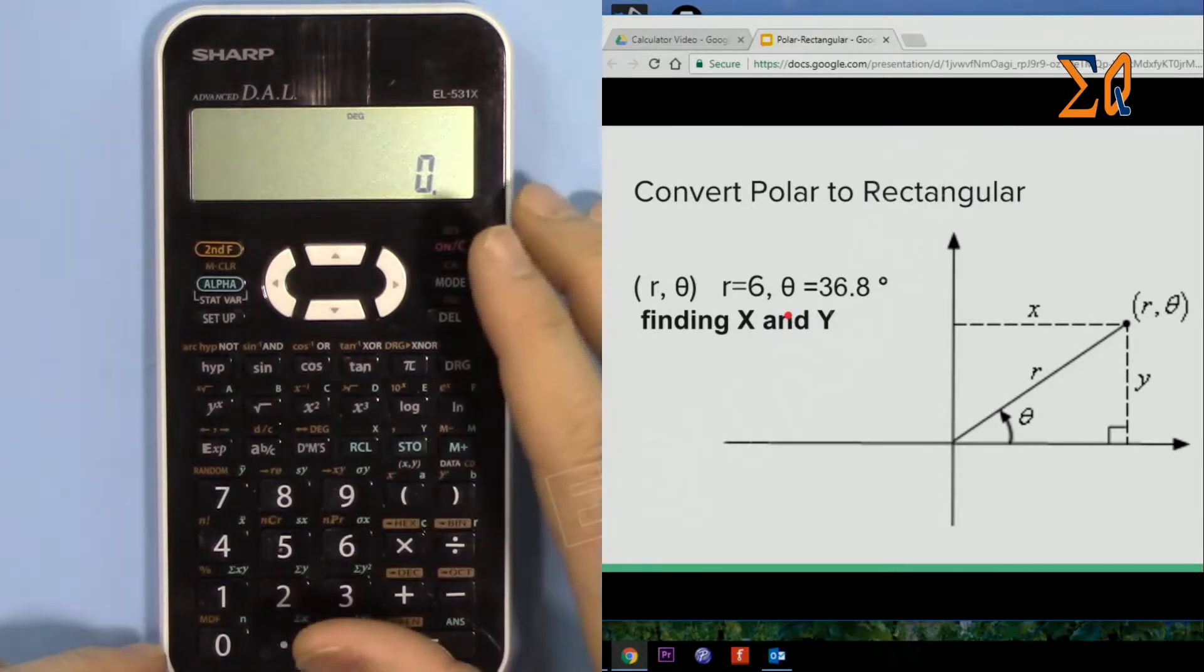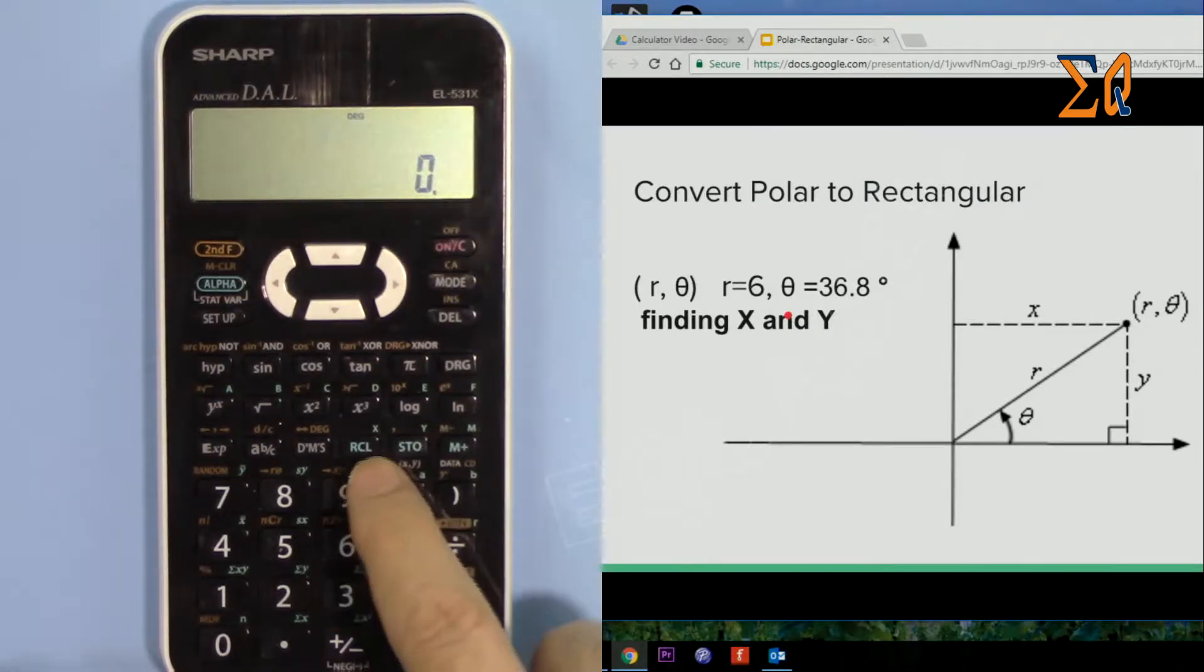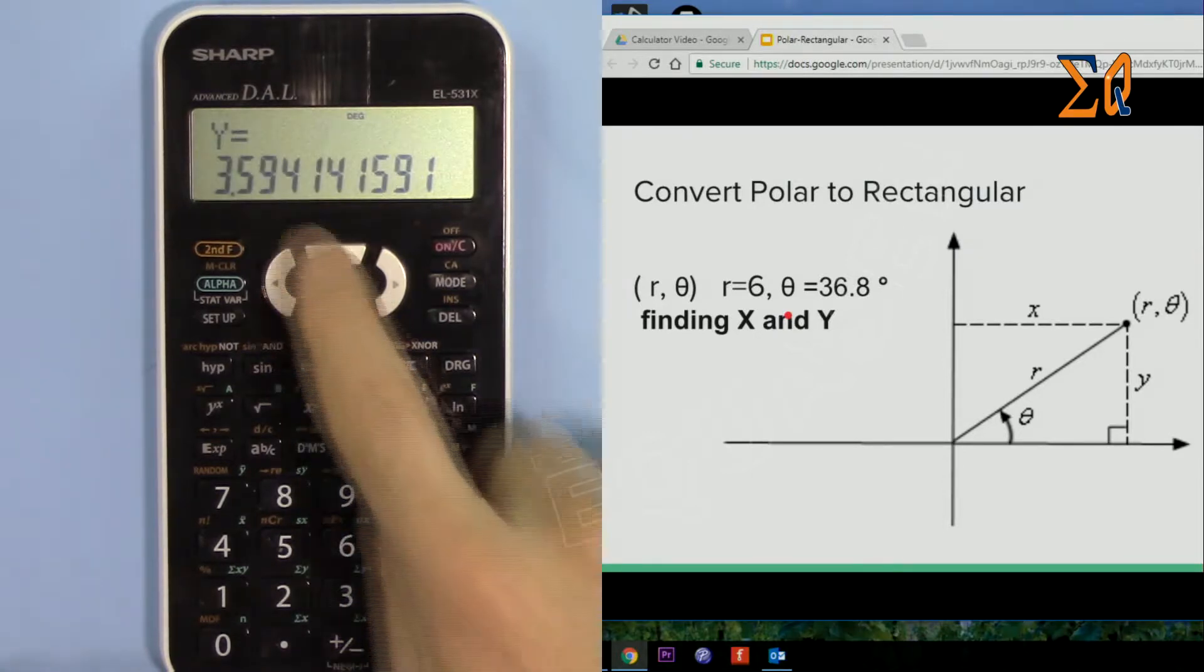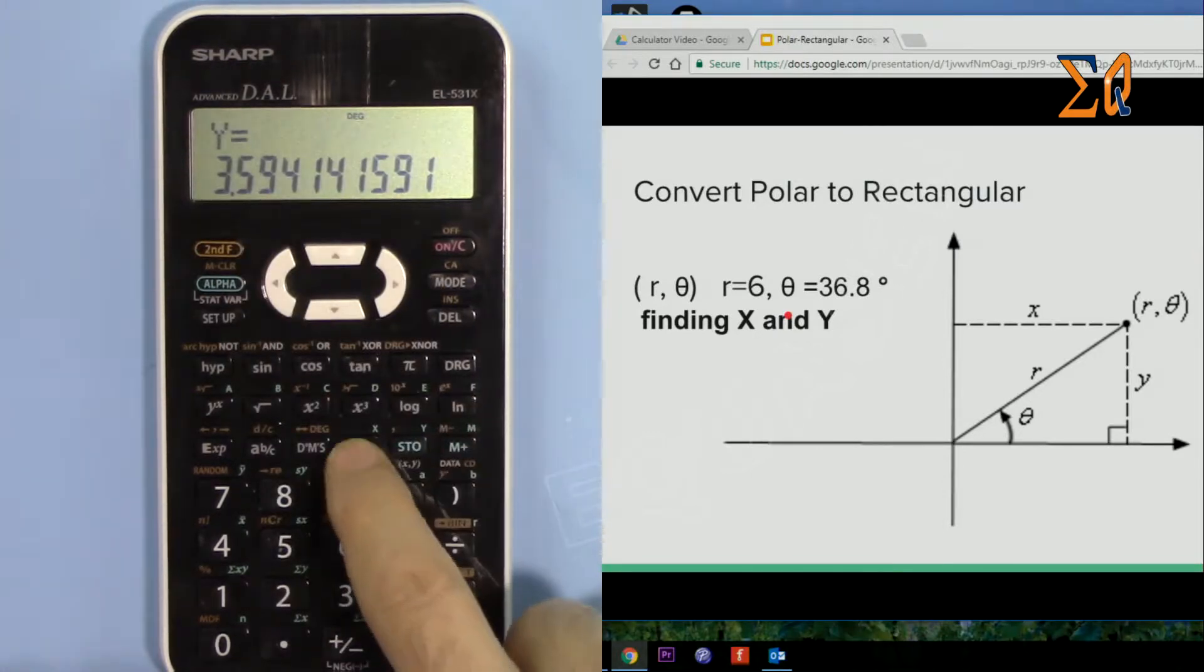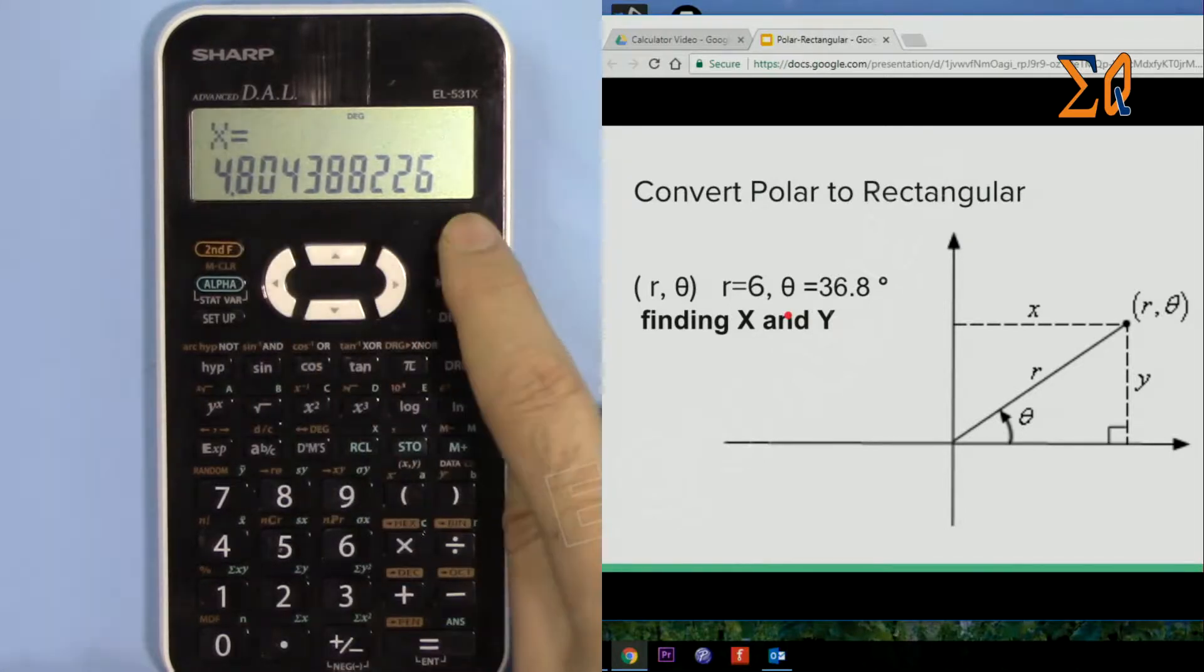And r and theta are always stored when you solve for X and Y. So just press recall Y and it will give you the Y. And then recall X itself will give you the X. Same way for all calculations.